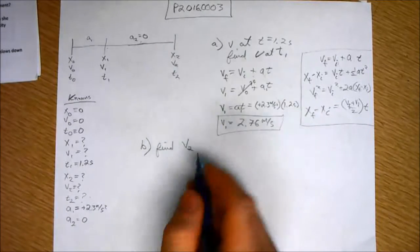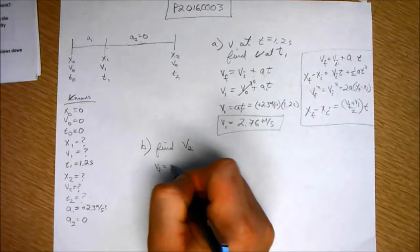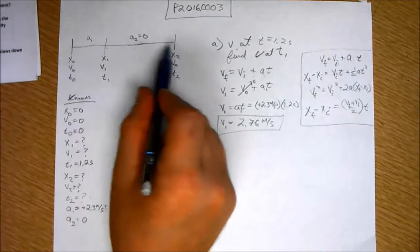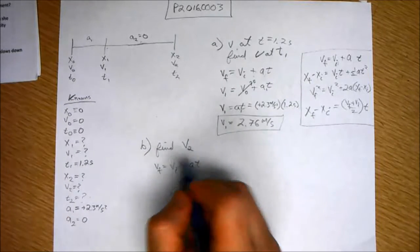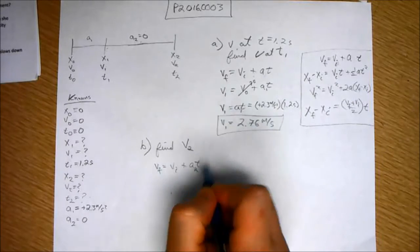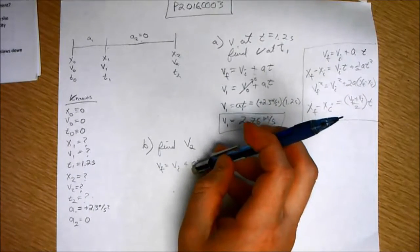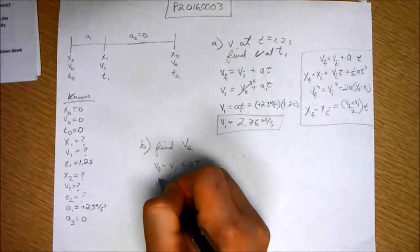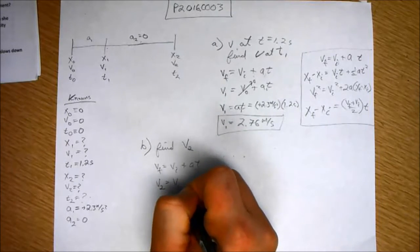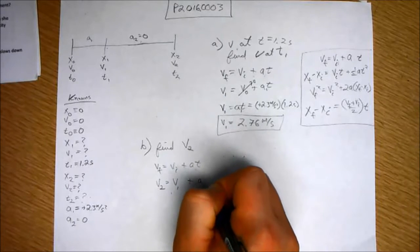Well, we can use that same equation, v final equals v initial plus a t. We don't have time now because we don't know how much time has passed here. But, look at this. a2, excuse me, if I rewrite this equation, v2 equals v1 plus a2t,